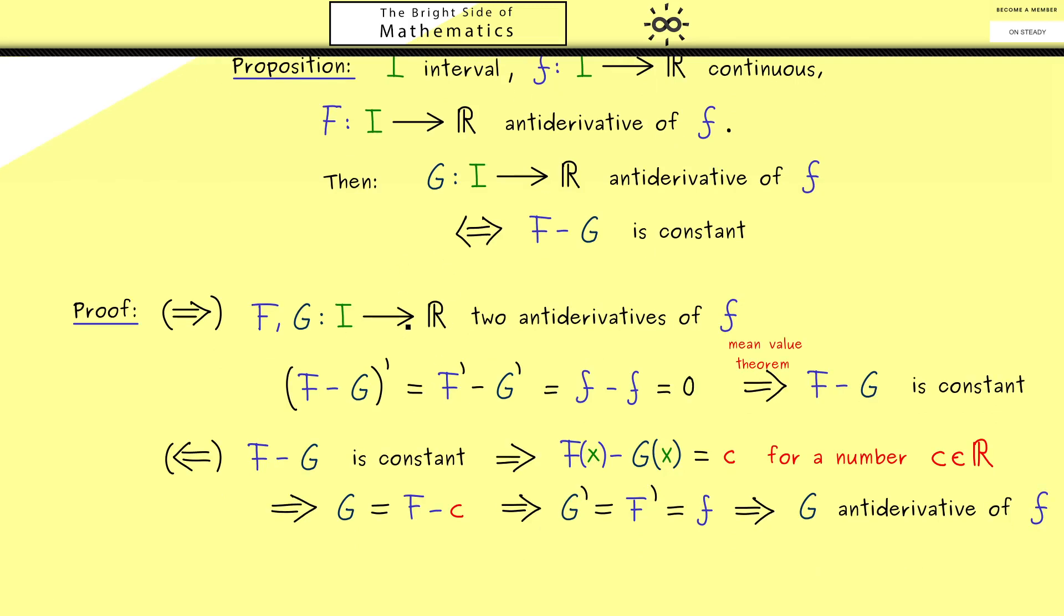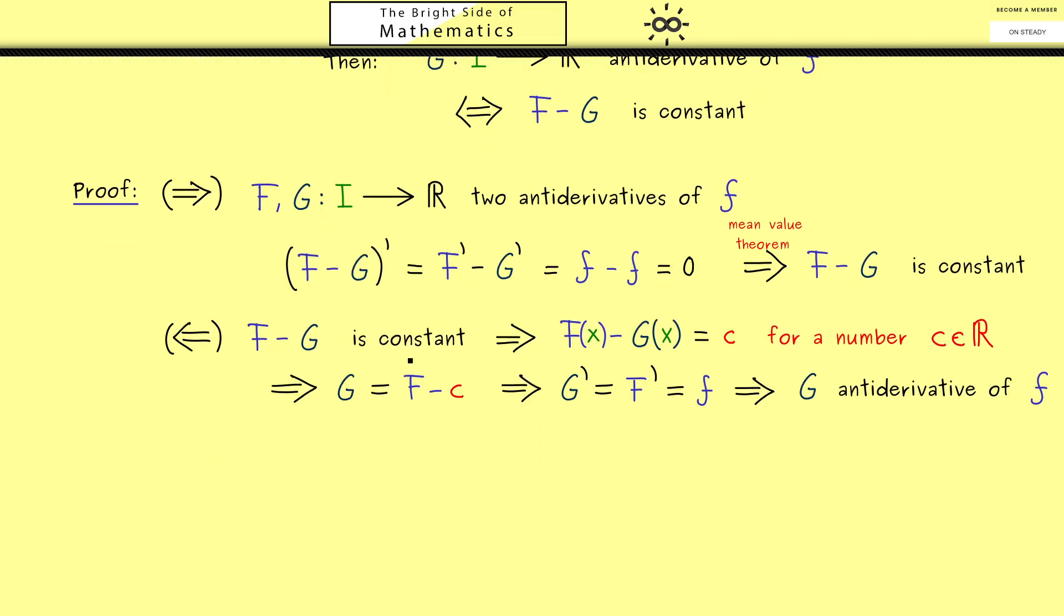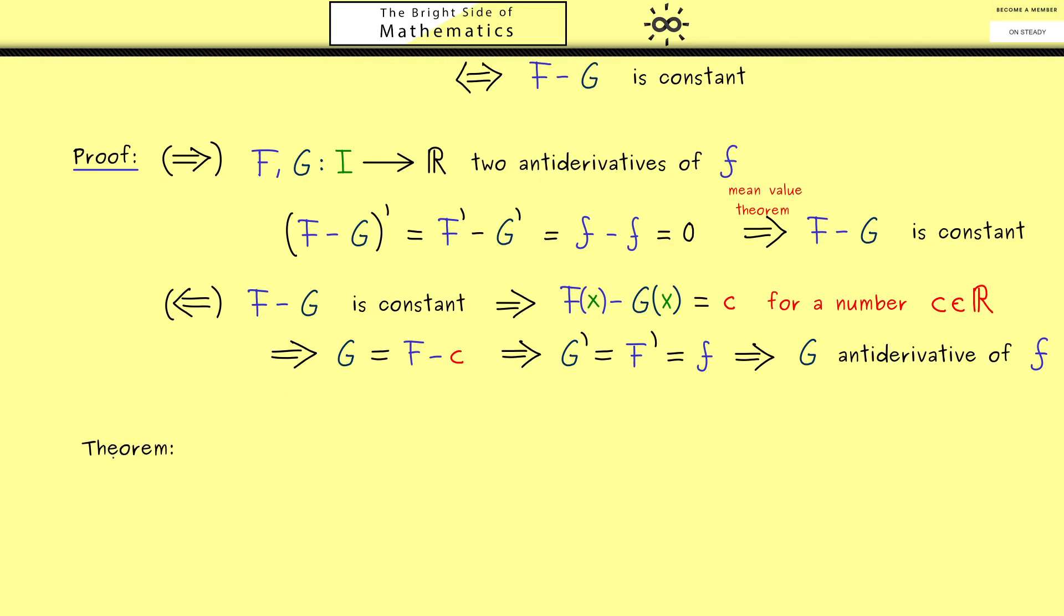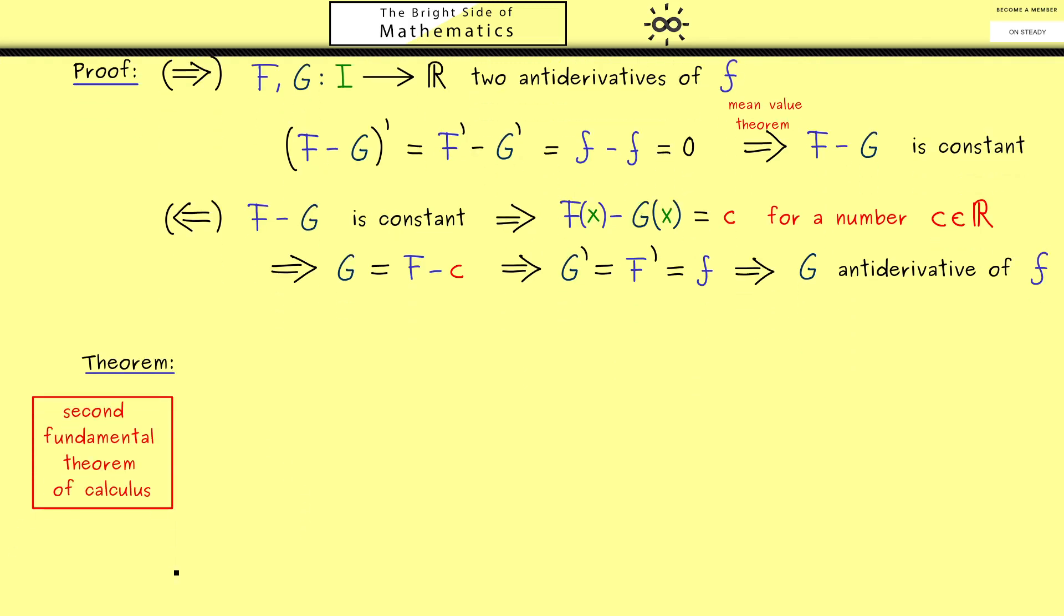And now I want to apply it immediately to the next theorem. Indeed, this will be the important second fundamental theorem of calculus. So as you can see, this should be something you really should remember. Now the assumptions here are not different from before. We still have our interval and the continuous function f. Moreover, we need an antiderivative again, and let's call it capital F, of course.